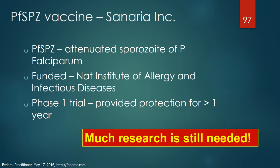A study of an attenuated sporozoite vaccine PfSPZ for Plasmodium falciparum published in 2016, developed by Sanaria Inc. and funded by the National Institute of Allergy and Infectious Diseases, was a phase 1 trial that provided protection for over one year. Whether this immunity will last or decline like the RTS,S/AS01 vaccine remains to be seen. Much research is still needed regarding vaccines for malaria.